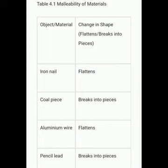It is observed that the iron nail flattens. Similarly, the aluminium wire also flattens upon being beaten by the hammer. But the coal piece and pencil lead break into pieces.